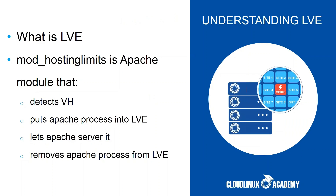In a common shared hosting environment, a single site can consume all CPU, IO, memory resources, or Apache processes — LVE prevents that. It works through a collaboration of the Apache module mod_hostinglimits, which detects the virtual host for which the request came, puts the Apache process into LVE for that user, lets Apache serve the request, then removes the Apache process from the user's LVE. The kernel ensures all LVEs get a fair share of server resources. Today we can limit CPU, memory, IO, IOPS, number of processes, and number of entry processes.